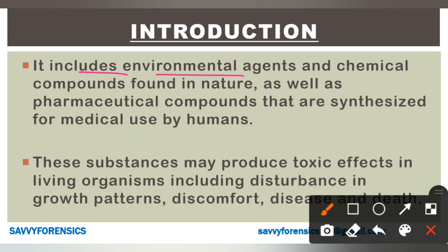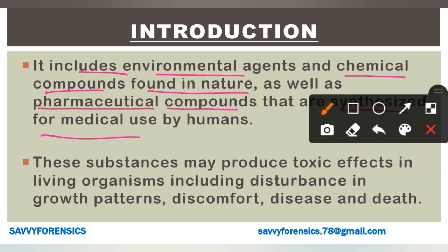Toxicology includes environmental agents and chemical compounds found in nature, as well as pharmaceutical compounds that are synthesized for medicinal use by humans. So basically, environmental agents, chemical compounds found in nature, and pharmaceutical compounds can all be considered poisons in toxicology. Even any chemical — or anything taken in excess — can become a poison.